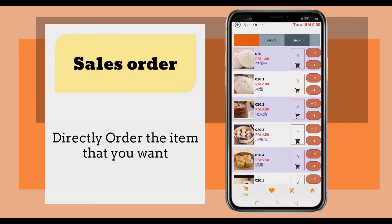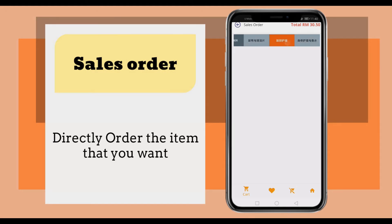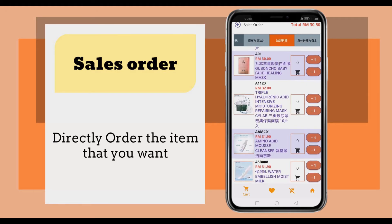Click the sales order. It will display all the item master list when you click in. You can directly choose from here with the quantity you want, or you can choose according to the item class.